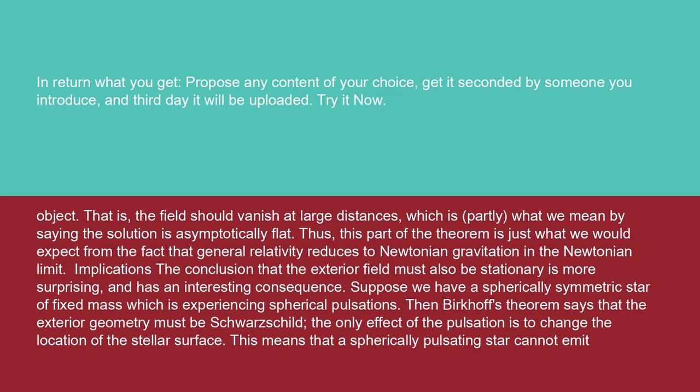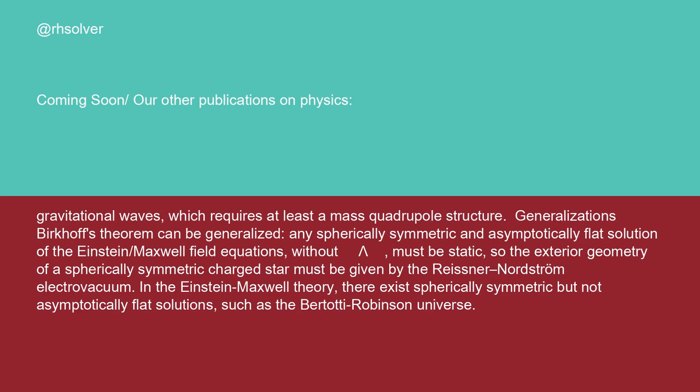The conclusion that the exterior field must also be stationary is more surprising, and has an interesting consequence. Suppose we have a spherically symmetric star of fixed mass which is experiencing spherical pulsations. Then Birkhoff's theorem says that the exterior geometry must be Schwarzschild. The only effect of the pulsation is to change the location of the surface. This means that a spherically pulsating star cannot emit gravitational waves, which requires at least a mass quadrupole structure.